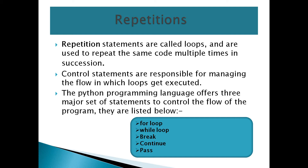Now repetition statements, also called loops. Loops are used to repeat some code multiple times. A for loop is used for iterating over a sequence like lists, tuples, and dictionaries. Python offers three major loop control statements: for loop, while loop, break, continue, and pass.